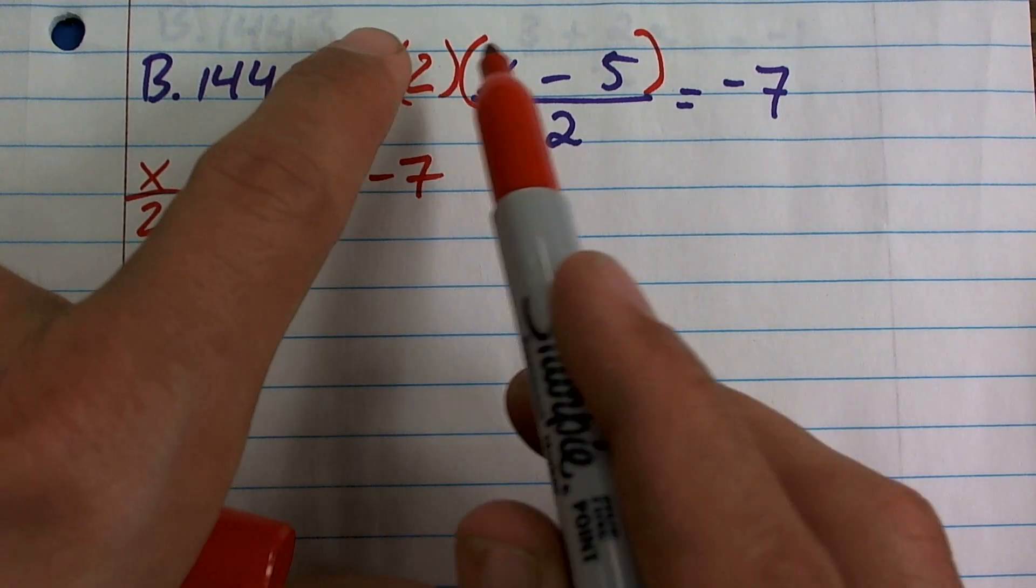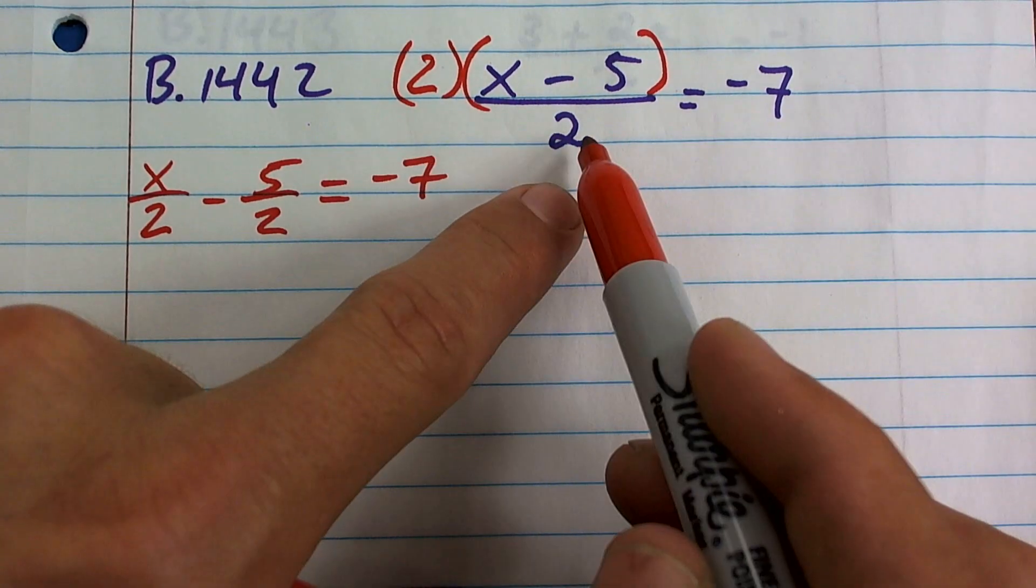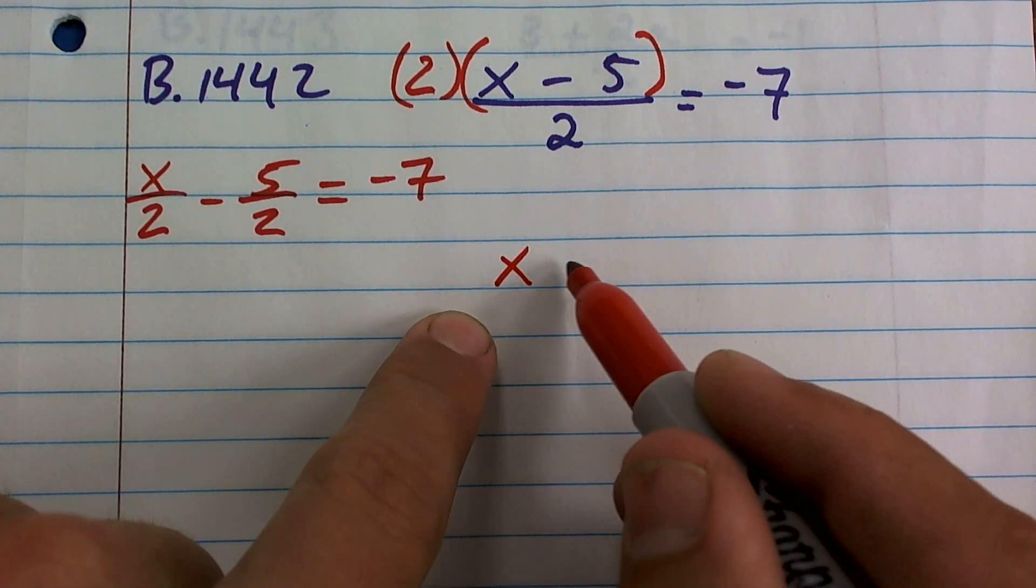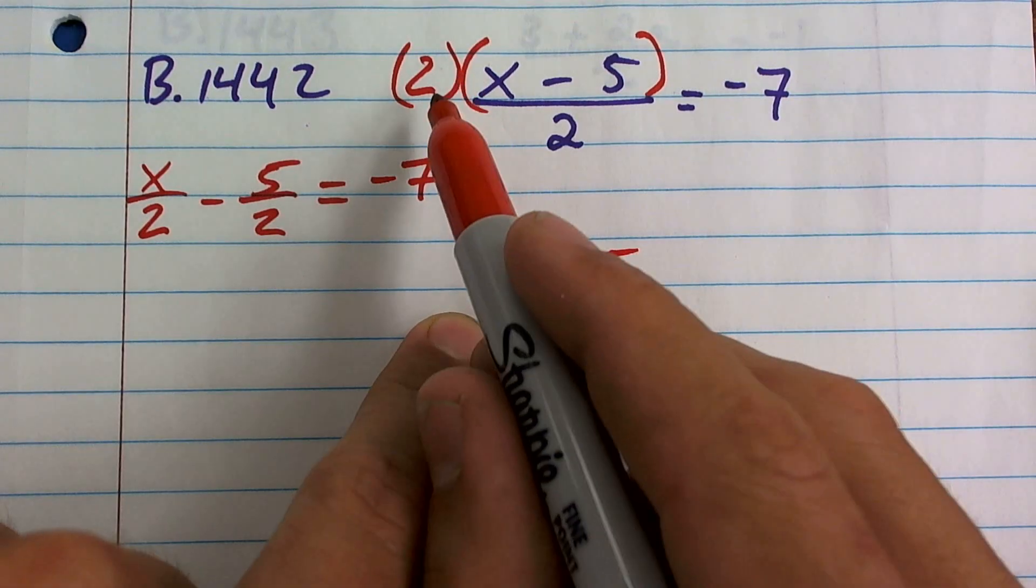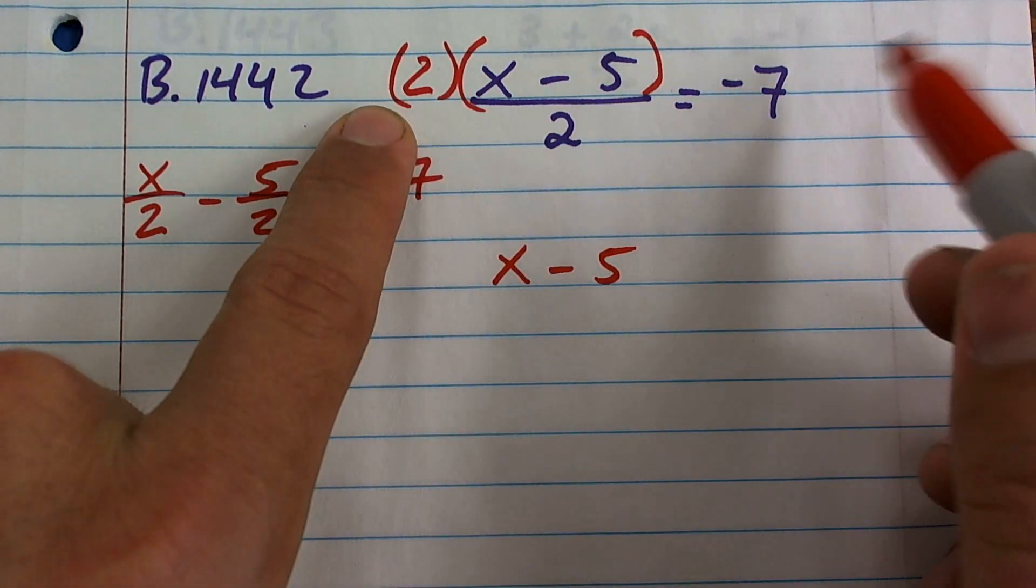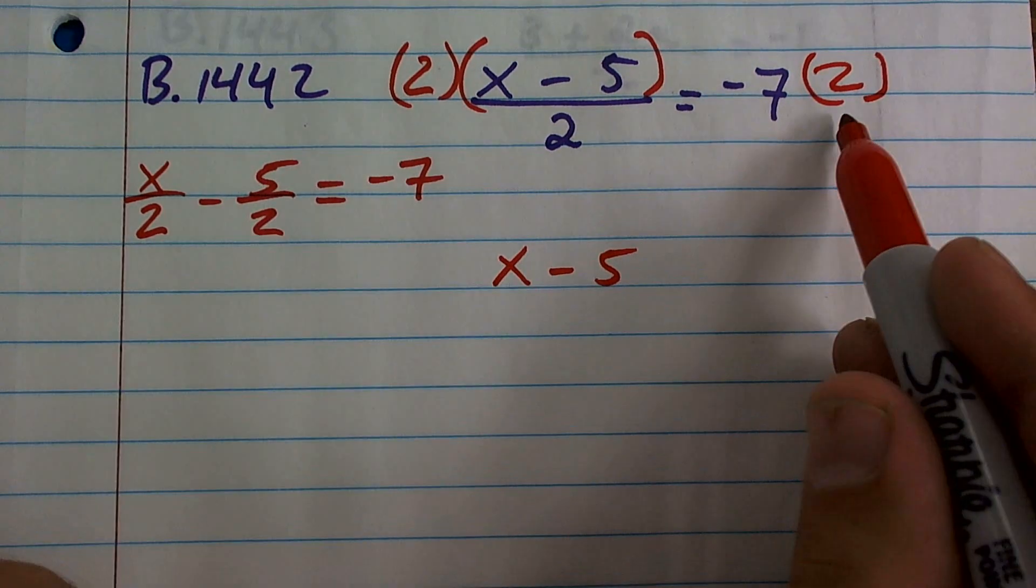So therefore, I have two times this divided by two. So two divided by two can just equal one, which I can just get x minus five. Now, I've got to be very careful. You've got to make sure, since you multiply two on the left side of the equal sign, you have to multiply two on the right side of the equal sign.